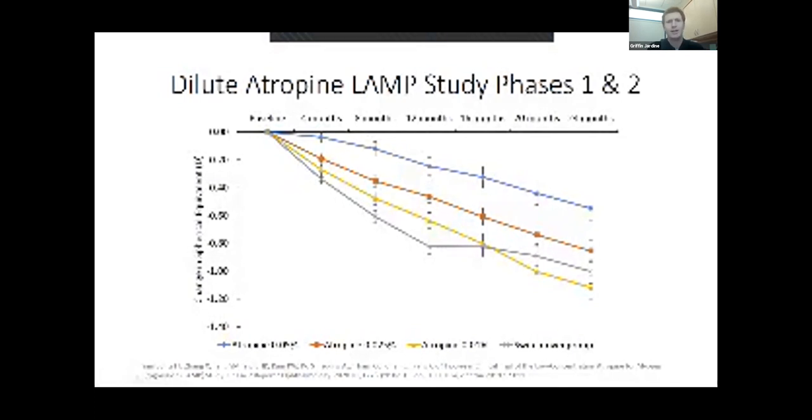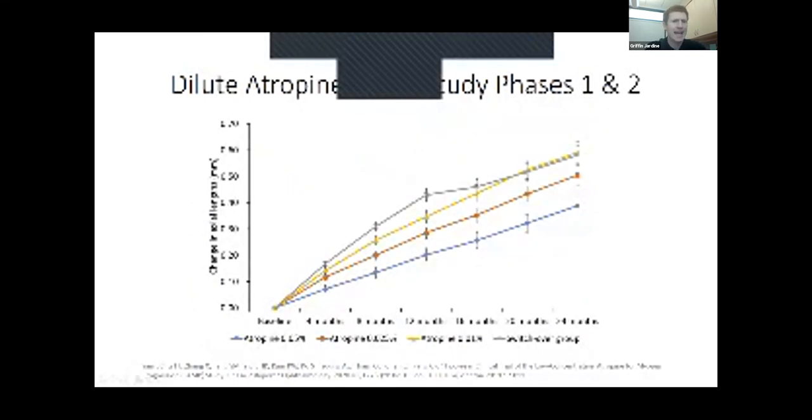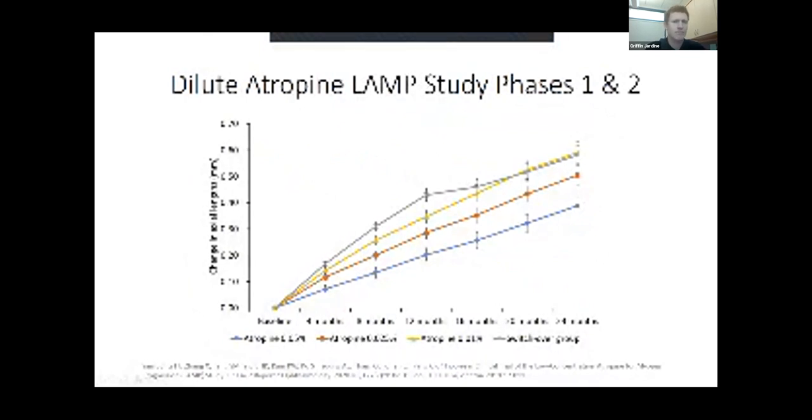We're still waiting for the washout period. The jury's out on whether the higher concentration will have a bigger rebound phenomenon, but hopefully not since these are all lower. The 0.05% was well tolerated, did not have significant incidence of photophobia or near blur requiring glasses. Most importantly, the change in axial length is the data point we care most about. The control group at one year was switched to what was determined to be the most effective of the three concentrations, 0.05, and in a year it actually passes the 0.01%. The next phase is the washout period.